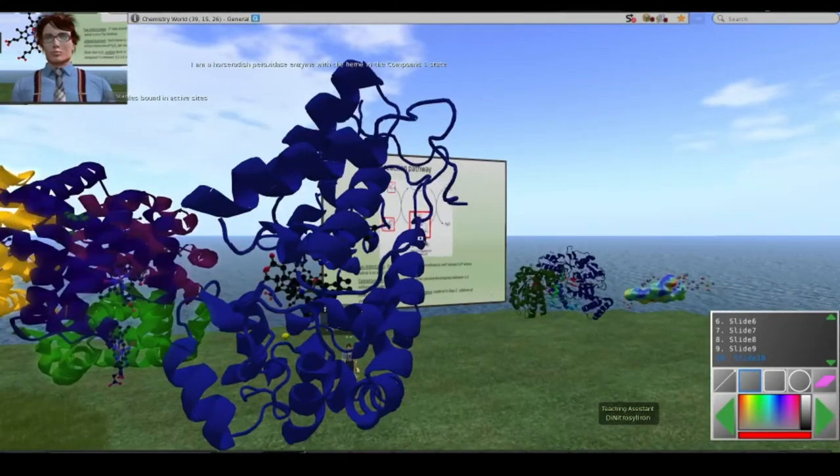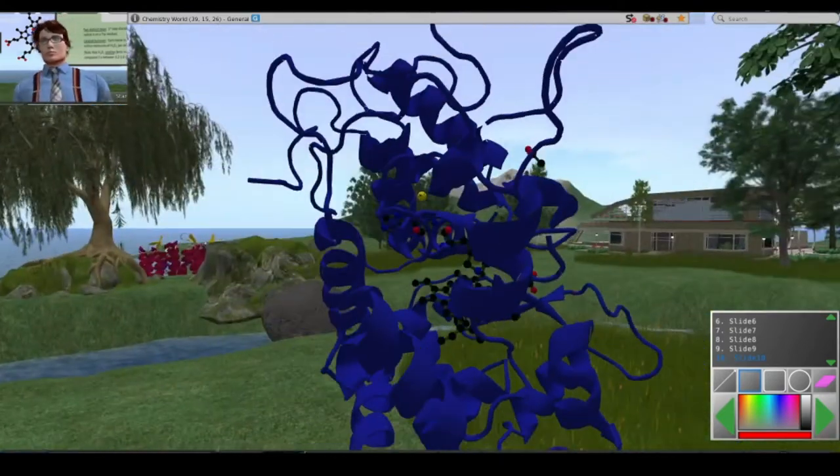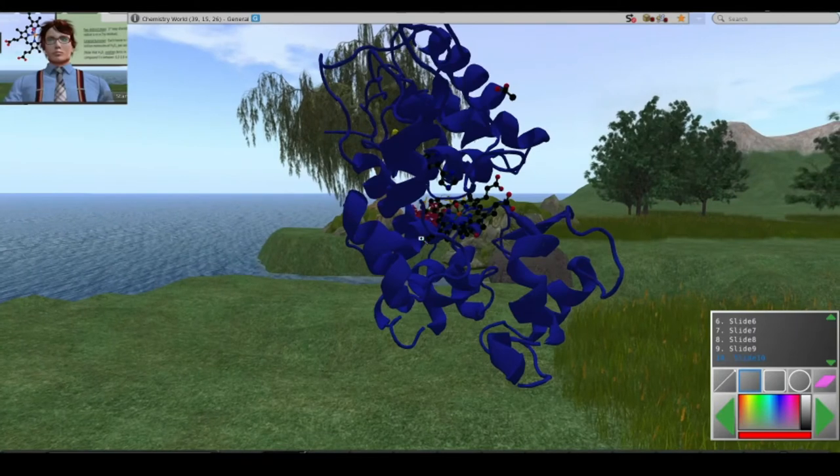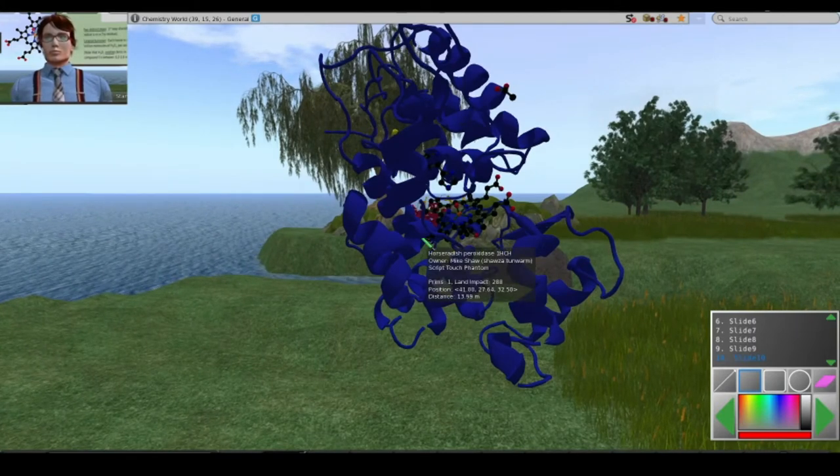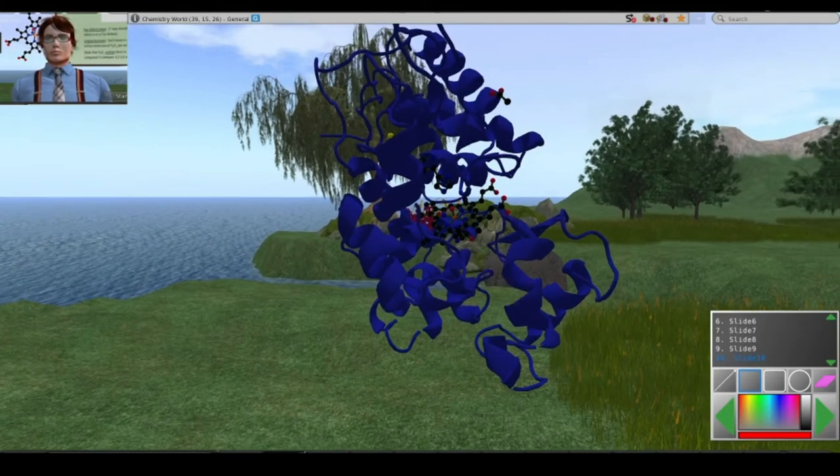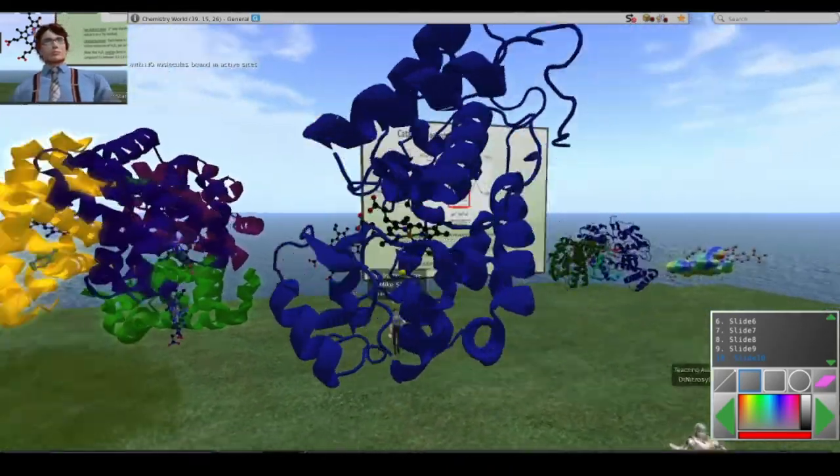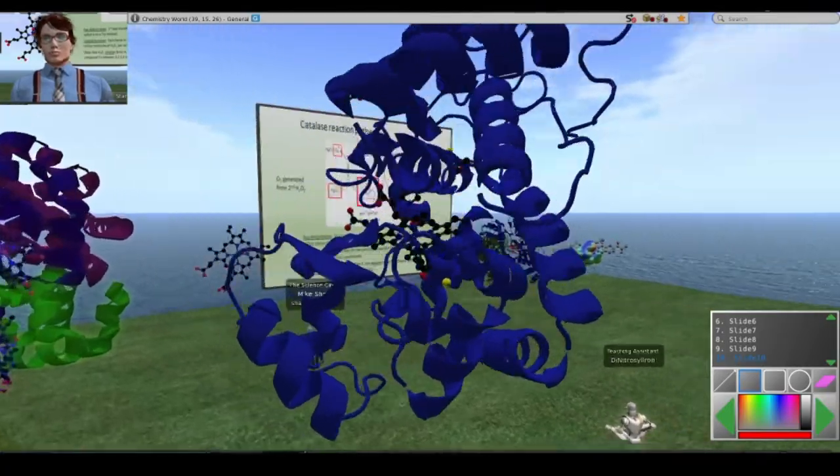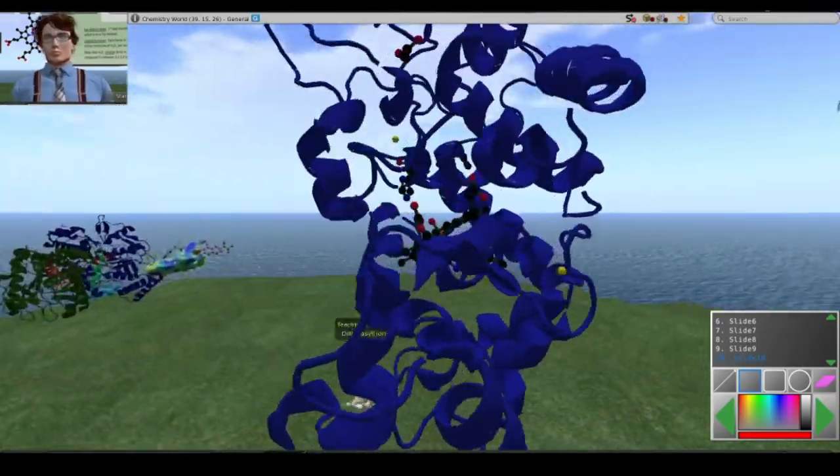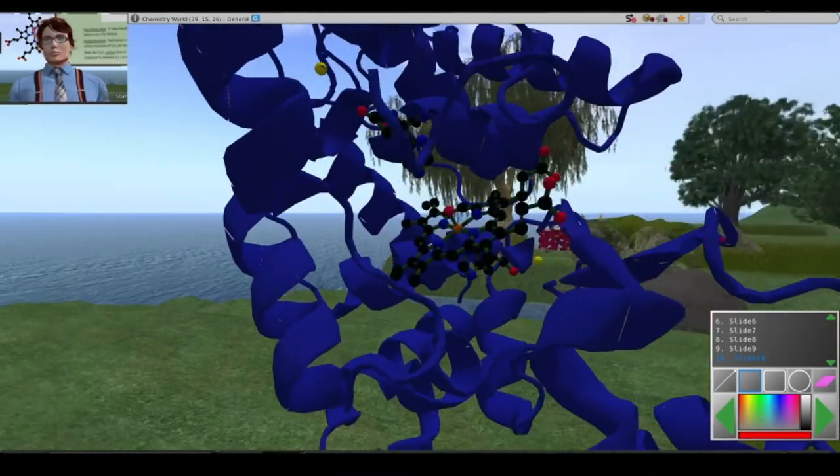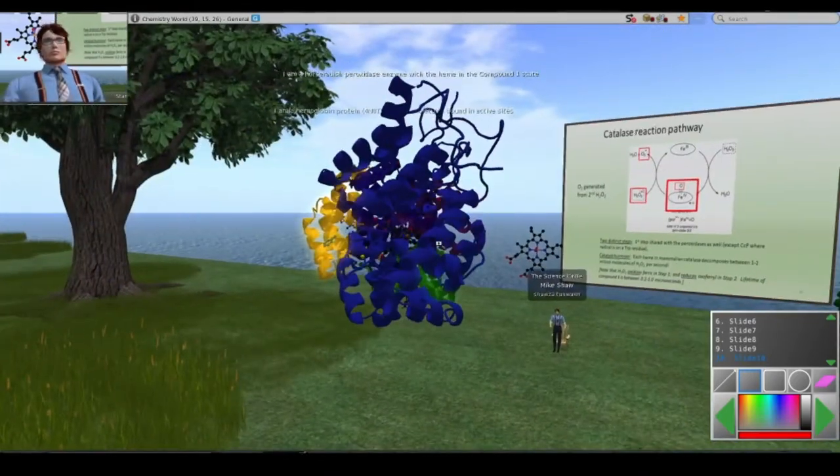Horseradish peroxidase is also produced locally. I am near St. Louis and Millipore Sigma is a major company here. The area grows horseradish, so horseradish peroxidase can be isolated from local materials.